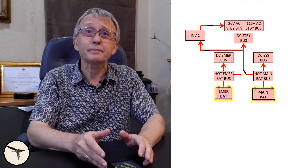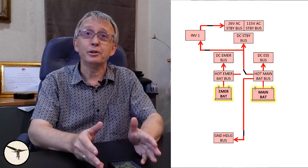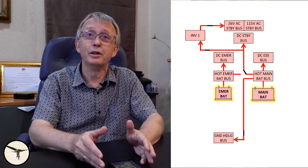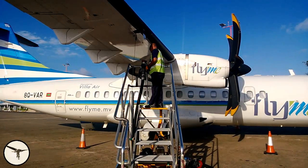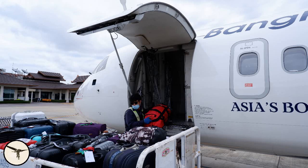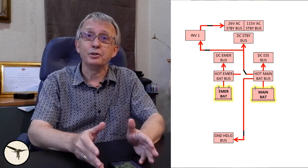Furthermore, the main battery powers the ground handling bus. It supplies the refueling system and the cargo door, which are electrically operated. This bus is not powered in flight.